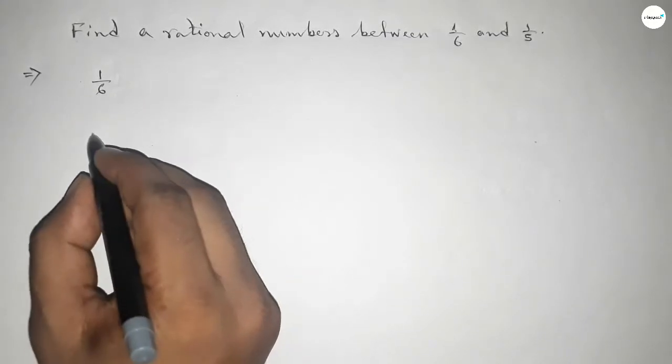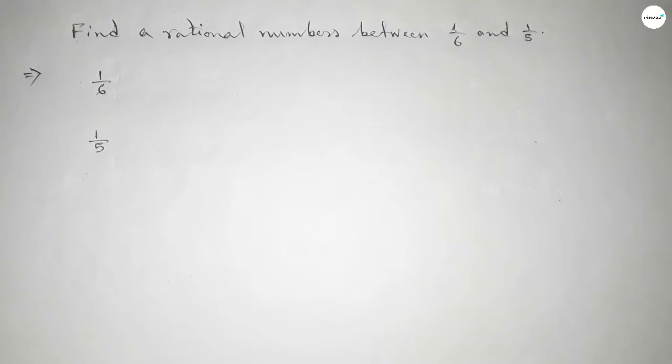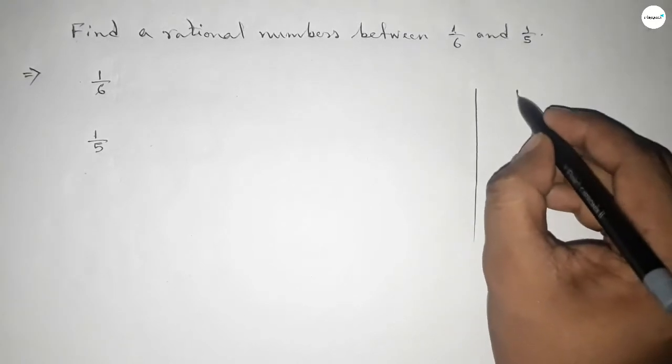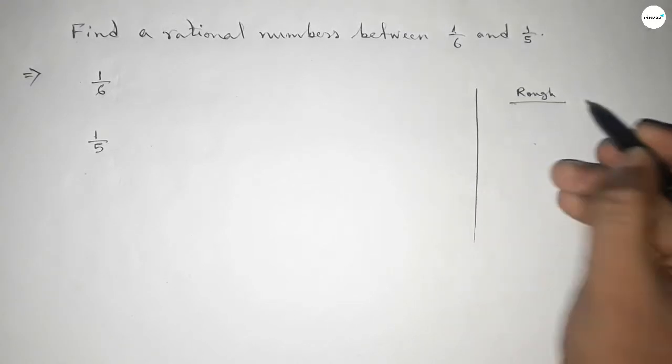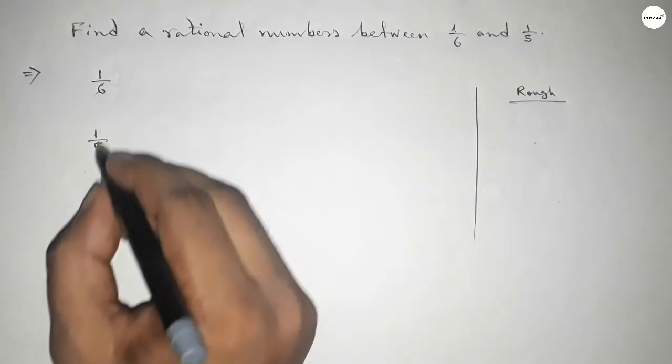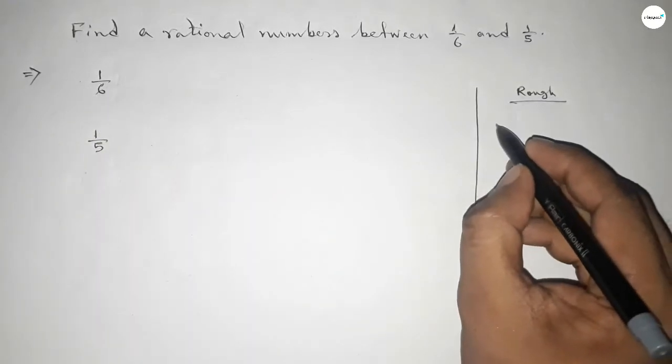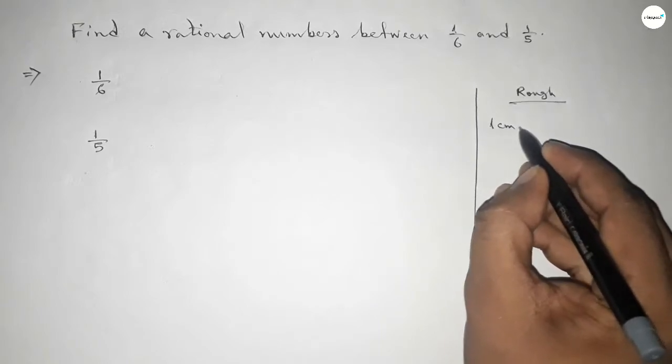First of all, write down the given numbers: 1/6 and 1/5. Now discussing some important calculations here - the denominators of both are not equal, so we have to first find the LCM of 6 and 5.